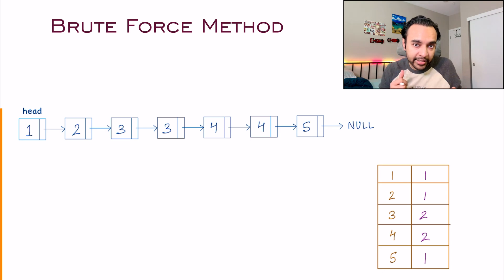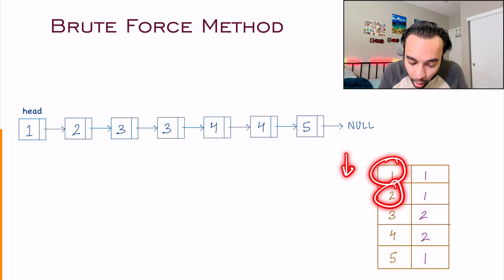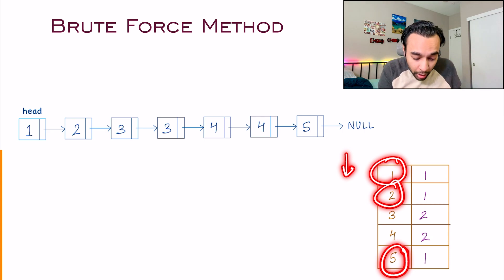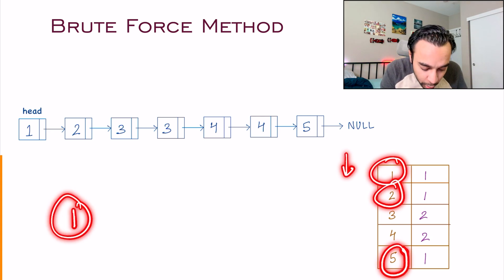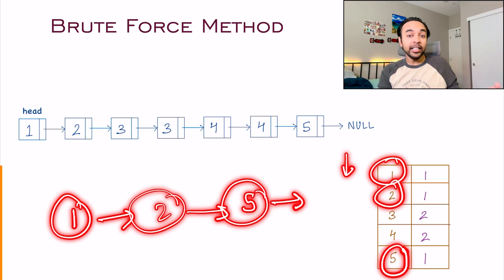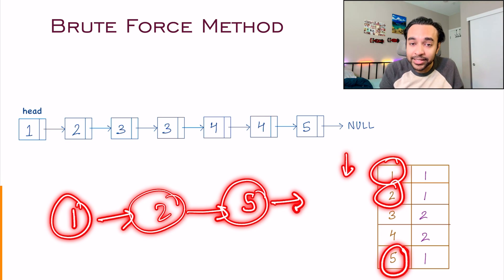In the next step, what you can do is iterate over this map and pick all of the elements whose frequency is one. So now you can return a new list, and this list does not have any of the duplicates — so this can be your answer.